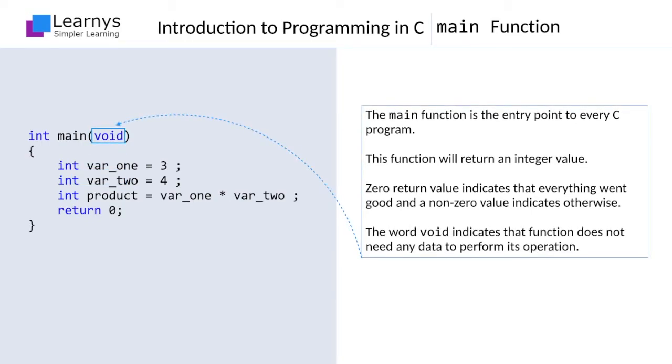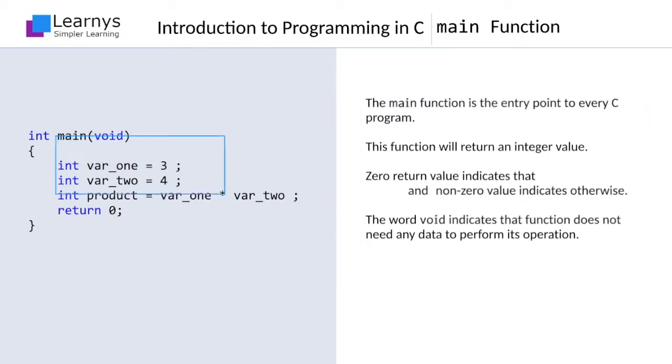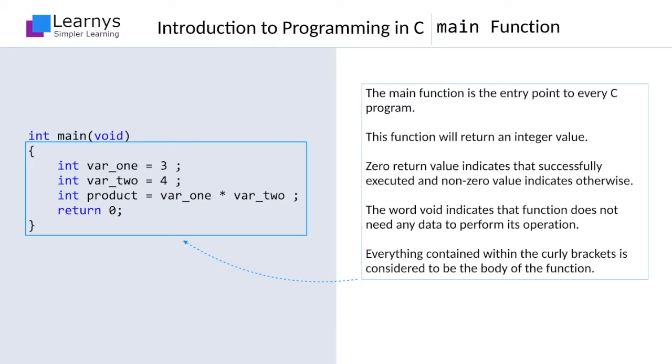The word void in between the parentheses following the name of the function indicates that this function does not need any data to perform its operation. You should also notice the pair of opening and closing curly braces. Everything contained within these brackets is considered to be the body of the function. The body of the function consists of a set of statements which are executed one after another.